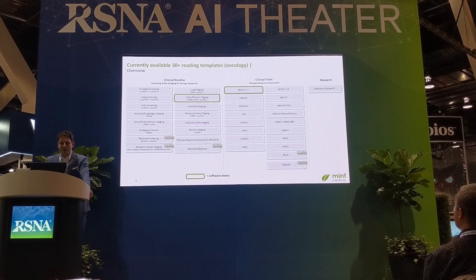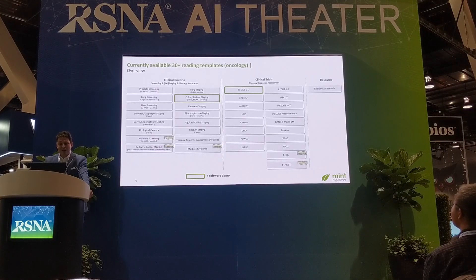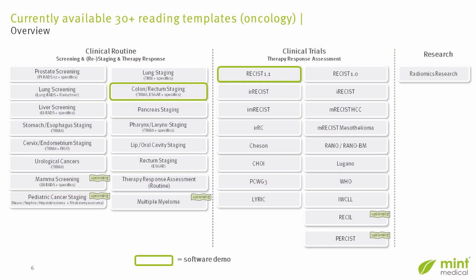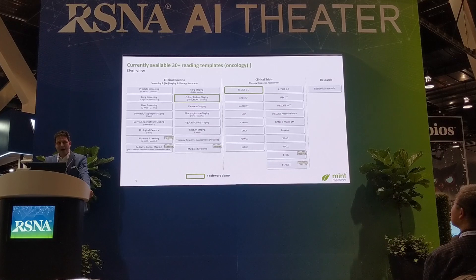Let's look at the currently available reading templates in Mint. We apply templates for different use cases: clinical routine, screening, restaging, and therapy response assessment. You can also apply our approach in clinical trials — for example, applying the most important criteria such as RECIST 1.1. And of course this guided radiological read approach can be used for research, where we support you in capturing radiomics parameters over time. I'll now hand over to AJ, who will demonstrate colorectal staging and RECIST 1.1 in Mint.